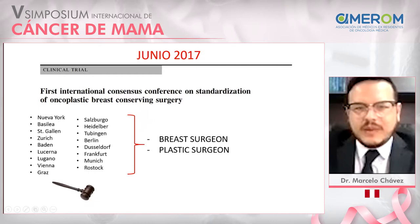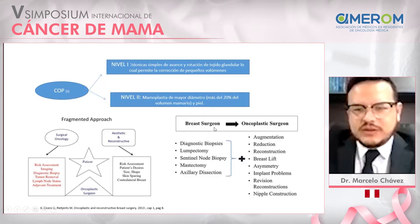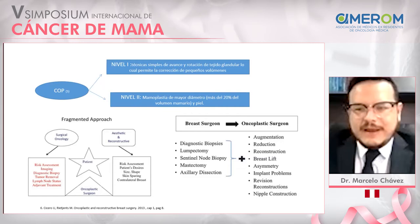In 2017, breast surgeon and plastic surgeon collaboration was described as a bi-modality approach in oncoplastic surgery by COS-BOT. Level 1 of oncoplastic surgery depends on the volume of resection: level 1 is less than 20%, and level 2 is greater than 20%. In level 2, we need to move the nipple-areola complex and reduce the breast volume. Oncoplastic surgery requires skills in surgical oncology as well as knowledge of plastic surgery: reduction, reconstruction, revision, and nipple-areola complex management.